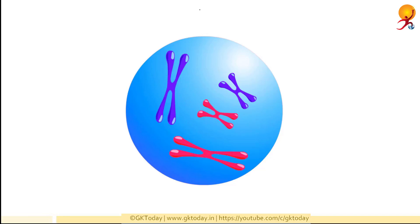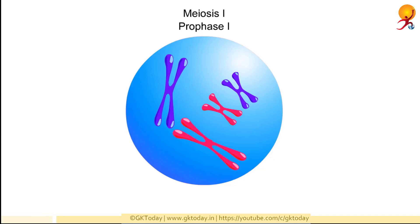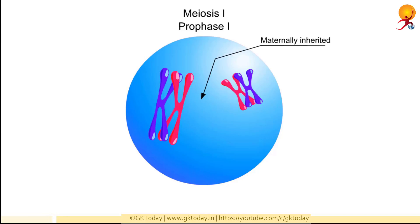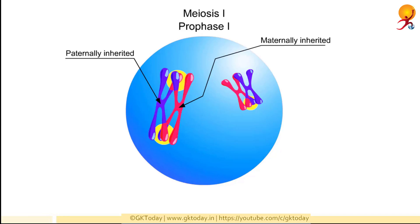Meiosis consists of two successive cell divisions called meiosis 1 and meiosis 2, each of which is subdivided into four phases. In the first phase of meiosis 1 called prophase 1, the homologous chromosomes or homologues in a diploid cell come together. Each pair consists of one chromosome inherited from the mother (colored red) and one inherited from the father (colored blue). When they come together, the chromosomes can cross over each other forming an X-shaped structure. At the crossover site, the homologous chromosomes exchange segments. This exchange results in genetic variability in the daughter cells.